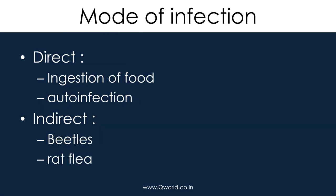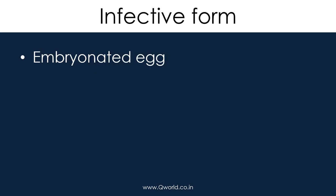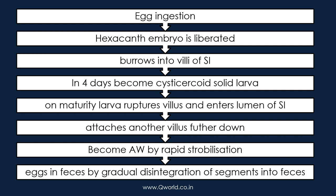Mode of infection: direct is ingestion of food contaminated with eggs, or auto-infection. Indirect is through rat fleas or beetles. The infective form is the egg. The egg is ingested, the embryo is liberated in the small intestine where the adult worm will develop, but there is first a larval stage known as the cysticercoid.